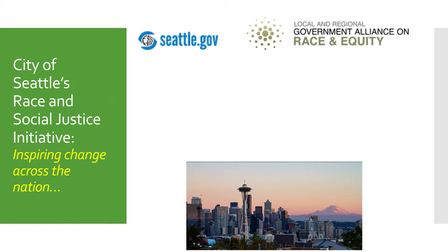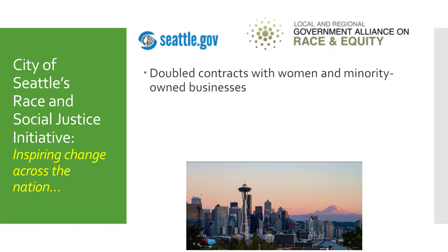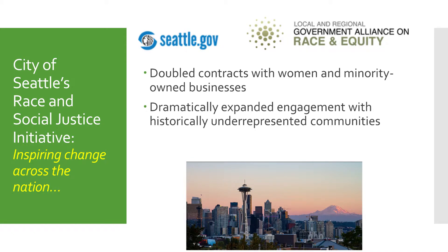Let me take you back to 2005, when the City of Seattle launched its Race and Social Justice Initiative, which was a citywide effort to end institutional racism in city government and to achieve racial equity across their community. They started applying a racial equity lens to every intervention proposed across every division within its system. For example, if you wanted to propose building a new bus stop or library in a neighborhood, that division or department would first have to apply an equity lens to the proposal. As a result of this initiative, Seattle doubled contracts with women and minority-owned businesses, dramatically expanded engagement with historically underrepresented communities, and soon had all departments using a racial equity toolkit.